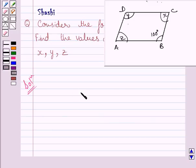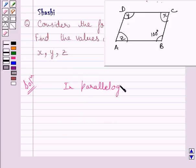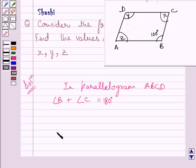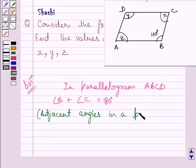In the given parallelogram ABCD, angle B plus angle C is equal to 180 degrees, since adjacent angles in a parallelogram are supplementary.